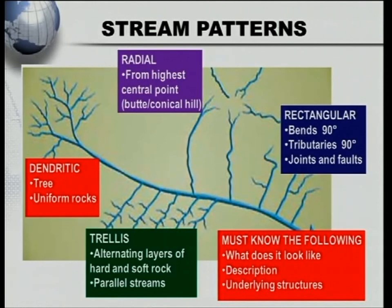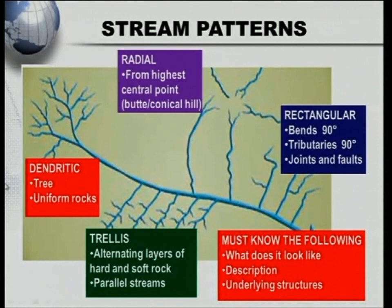Firstly, the dendritic pattern — 'dendritic' looks like a tree; in fact it comes from the Greek word 'dendron' meaning tree. When you look at the dendritic pattern, you must know that the underlying structures would be uniform rocks — uniform meaning the same.